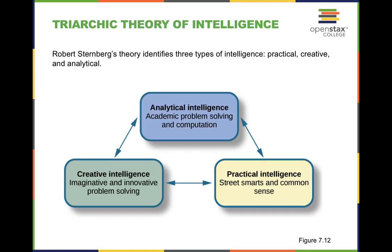Robert Sternberg proposed three types of intelligences: practical, creative, and analytical. Analytical intelligence is like academic problem-solving and computation — your ability to retrieve facts and understand complex relationships within an academic setting like mathematics. Practical intelligence is your street smarts and common sense — how you are with people and understanding human behavior. Creative intelligence is being innovative and imaginative, problem-solving from a creative standpoint that no one has introduced before.